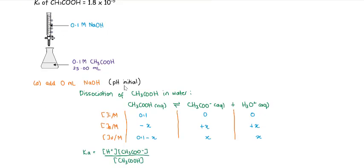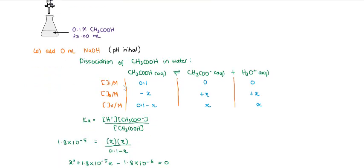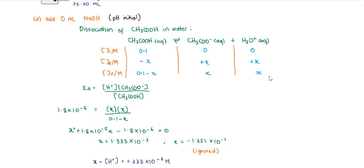First, calculate the pH if you add 0 mL of sodium hydroxide — this is just the initial pH. Since 0 mL NaOH is added, it means you didn't add the titrant yet, so the conical flask only has your acetic acid. The dissociation of acetic acid, since it is a weak acid, is partially dissociated. To calculate the pH, you need to find the value of X, because X is the concentration of H₃O⁺ at equilibrium.